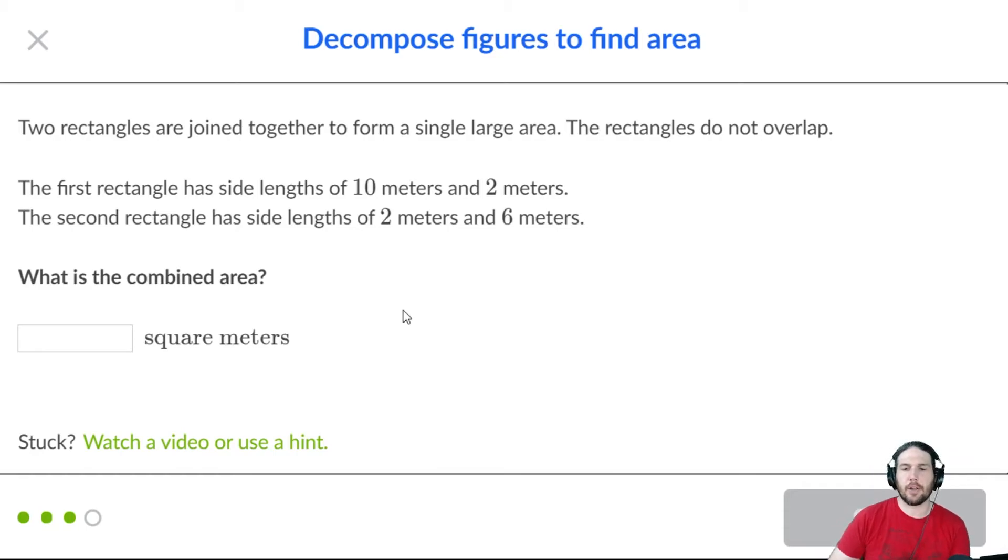Two rectangles are joined together to form a single large area. They do not overlap. I like that they mentioned that little bit. We have 10 by two, which is 20 square meters. And hey, let's talk about square meters for a second.